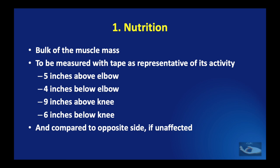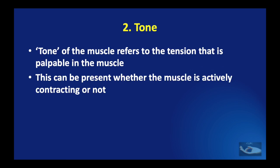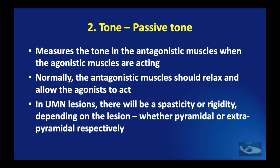The tone of the muscle refers to the tension palpable in the muscle, which can be present whether the muscle is actively contracting or not. There are two types of tone: passive and active. The passive tone measures tension in the antagonistic muscles when the agonist is acting — normally, antagonists should relax. In upper motor neuron lesions, spasticity or rigidity prevents this relaxation. For example, when passively flexing the elbow, the triceps should relax; this will not happen in an upper motor neuron lesion. The examiner palpates the triceps while passively flexing and extending the elbow.